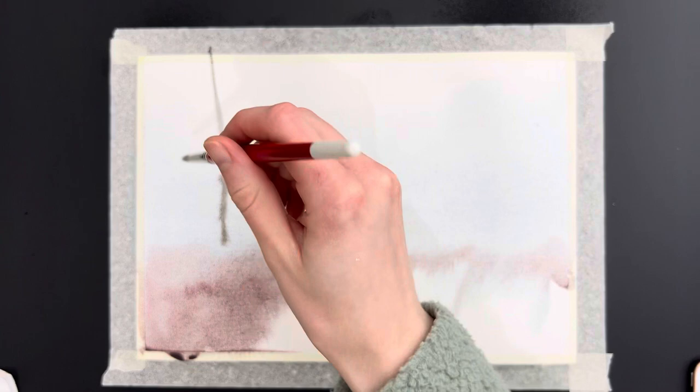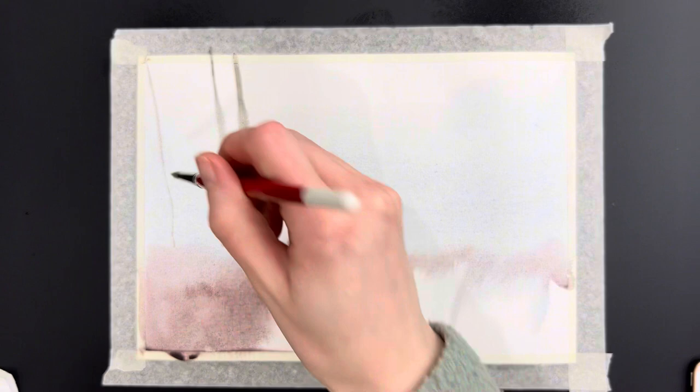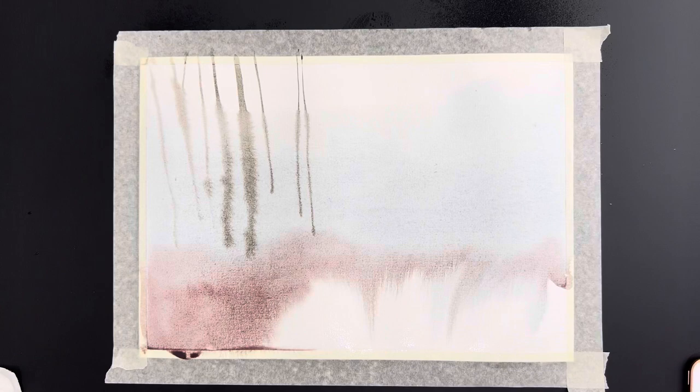So here I switch to the De La Rani Dallon D77 brush and I'm just putting in the trees in the background. The paper is still wet so it creates that blurred effect which is really effective and shows that they're in the background.